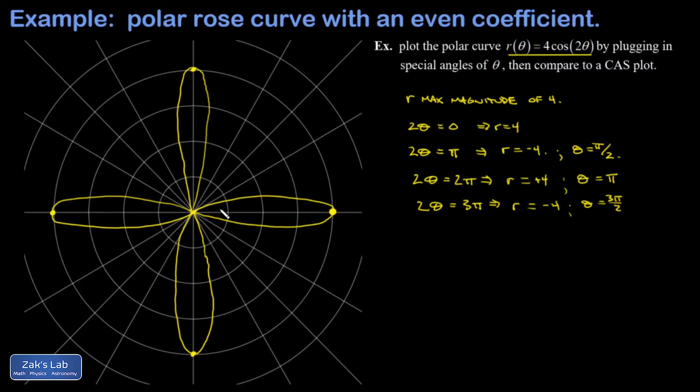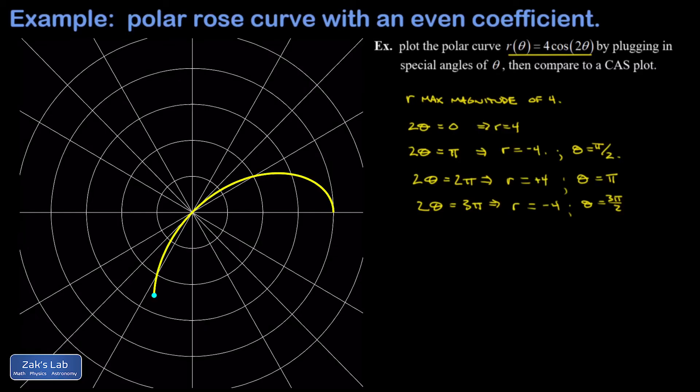Okay so once you recognize that a polar equation is talking about a rose curve, that's all you really need is the tips of the petals and you're going to get the entire curve.